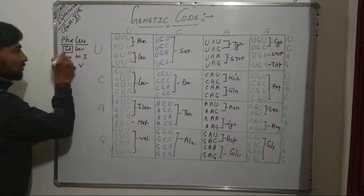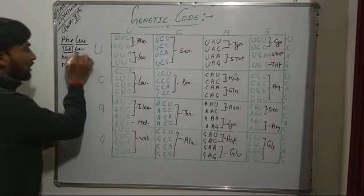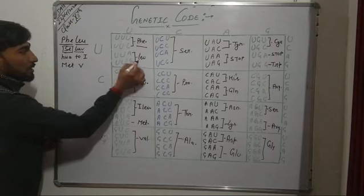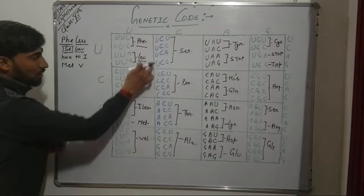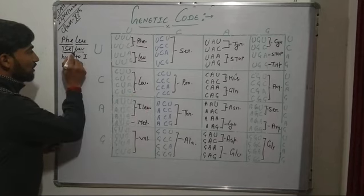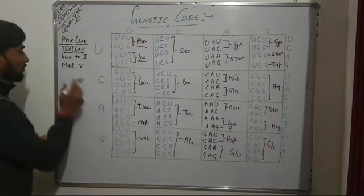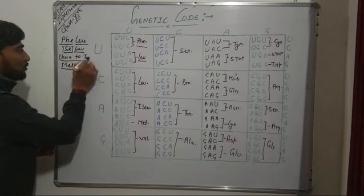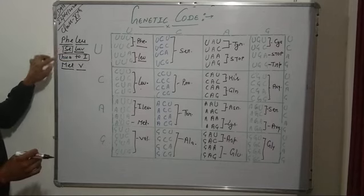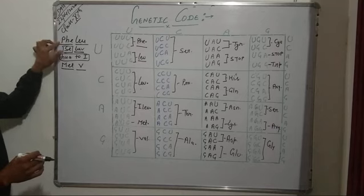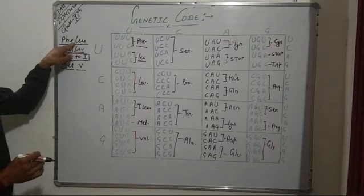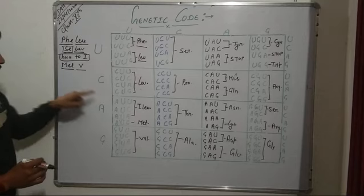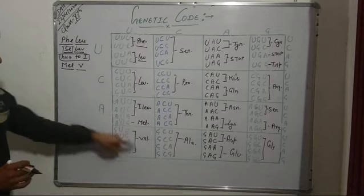We are completing both columns with this trick. Then lao is for isoleucine, met is for methionine, and V is for valine. The full trick is: phi-liu, se lao-va, to ai-met-vi.